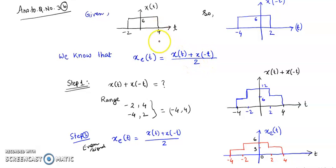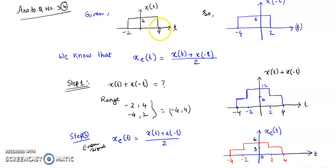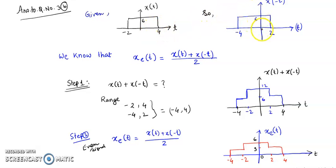We already have x(t) given. Now x(minus t) is the folded version of x(t), which can be plotted as shown. This is simply a time reversal operation, where the positive time index goes to the negative time index. So 4 becomes minus 4 on the left side, and minus 2 becomes plus 2 on the right side. The signal is the mirror image of x(t) and its amplitude remains 6. This is x(minus t).